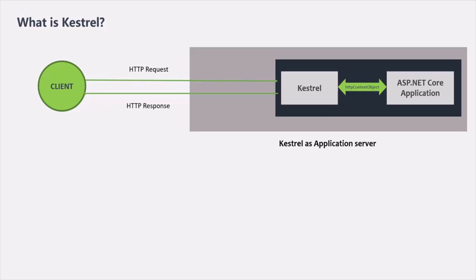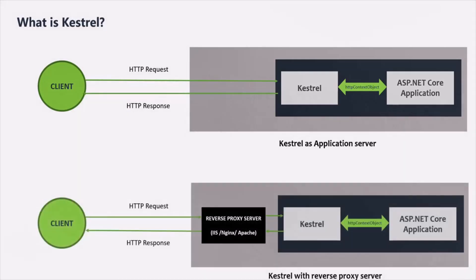An edge server is one that receives requests directly from the network and processes them — which is how Kestrel works during development. In production, we also have a reverse proxy server. Most websites today use a reverse proxy server, which receives the request from the internet and passes it to Kestrel for further processing. We need a reverse proxy in production because of Kestrel's limited functionality — it is used to provide those capabilities that Kestrel cannot.